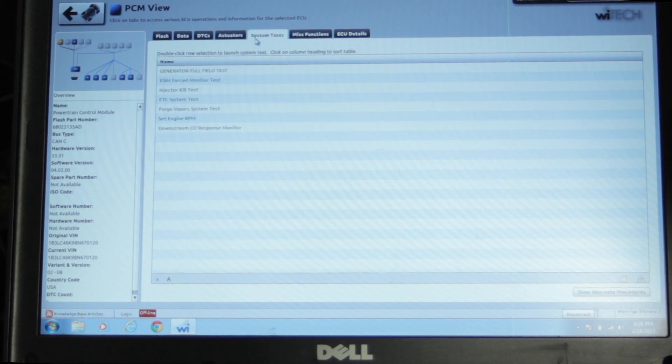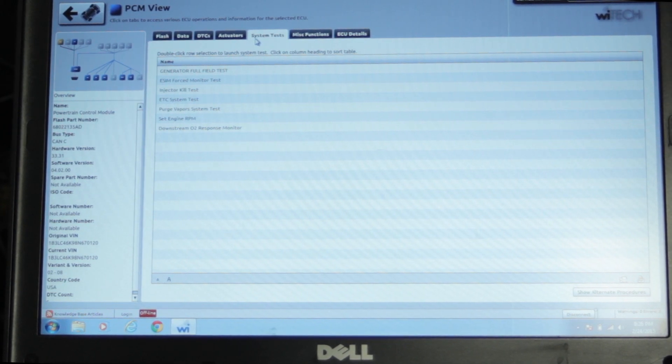So we're going to go over to system tests. There again we have generator full field, EVAP force monitor test, injector kill test, electronic throttle control test, nothing to do with that clutchless variable displacement compressor, even under miscellaneous functions. We can learn the throttle control, we can check the VIN, we can check the PCM odometer, we can do some additional tests of the throttle body, but still nothing to allow the technician to test the output controls of the ECM to the compressor solenoid.